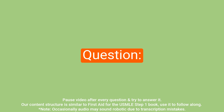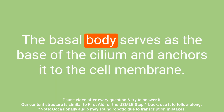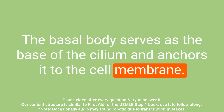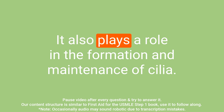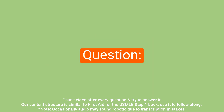Question: What is the role of the basal body in cilia? Answer: The basal body serves as the base of the cilium and anchors it to the cell membrane. It also plays a role in the formation and maintenance of cilia.